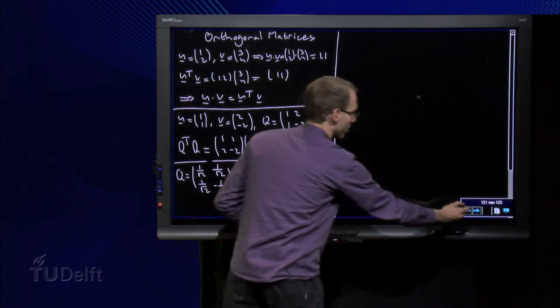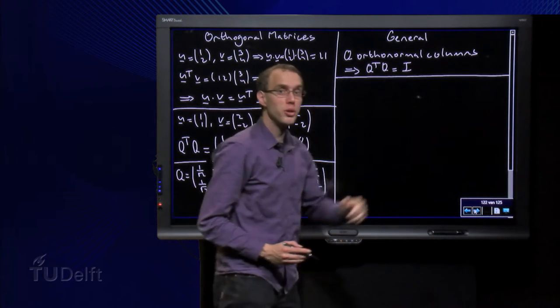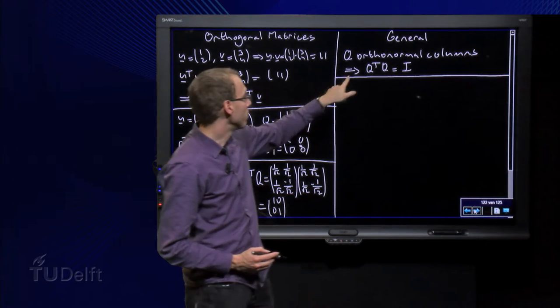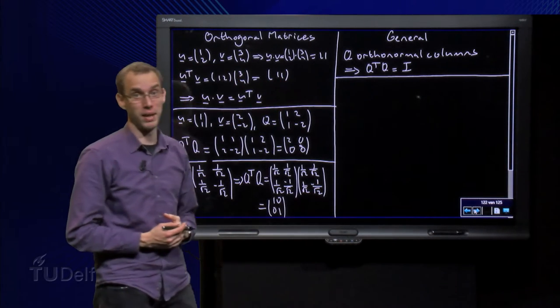So here we see something really nice happens. If a matrix Q has orthonormal columns, if we then compute Q transpose times Q, we always get the identity matrix.